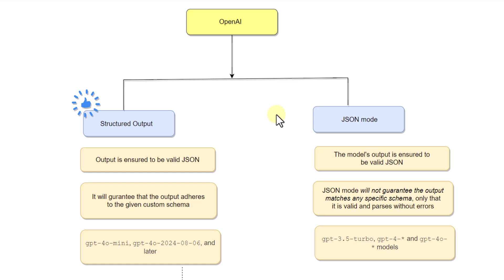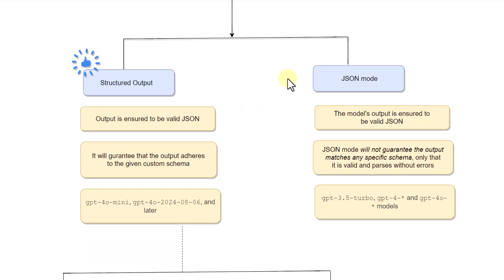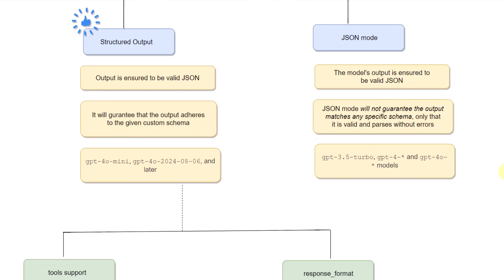In this video we will cover the difference between structured output and JSON mode of OpenAI, and we will also go over the sample code to see how to implement it. Let's first go over the JSON mode. Once you enable JSON mode, the model output is ensured to be valid JSON, but JSON mode will not guarantee the output matches any specific schema — only that it is valid and parsed without errors.